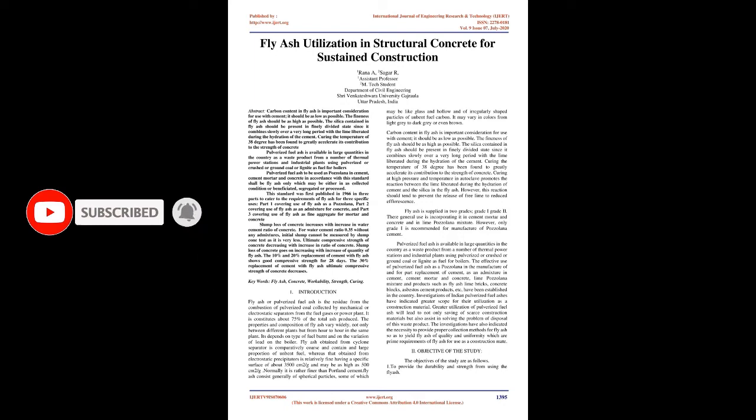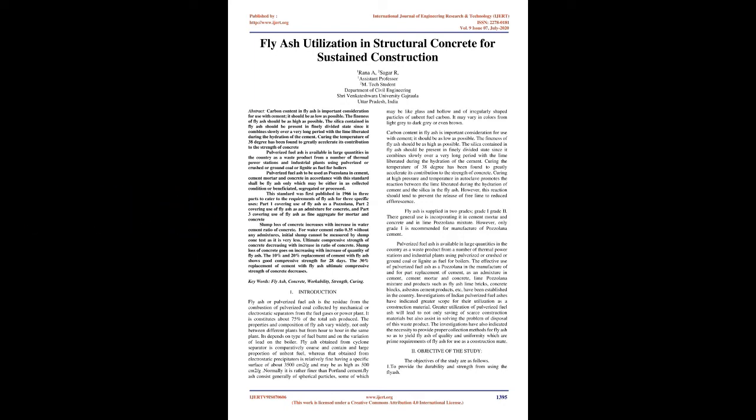The standard was first published in 1966 in three parts to cater to the requirements of fly ash for three specific uses: Part 1 covering use of fly ash as a pozzolana, Part 2 covering use of fly ash as an admixture for concrete, and Part 3 covering use of fly ash as fine aggregate for mortar and concrete.